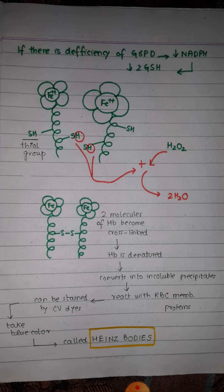Hemoglobin molecules contain thiol groups. When hydrogen peroxide comes, it takes hydrogen atoms from the thiol groups, causing two molecules of hemoglobin to become cross-linked, thereby denaturing hemoglobin. This denatured hemoglobin is converted into insoluble precipitates inside the red blood cells. These precipitates can be stained by crystal violet dye and appear blue; they are known as Heinz bodies, which are the characteristic feature of G6PD deficiency.